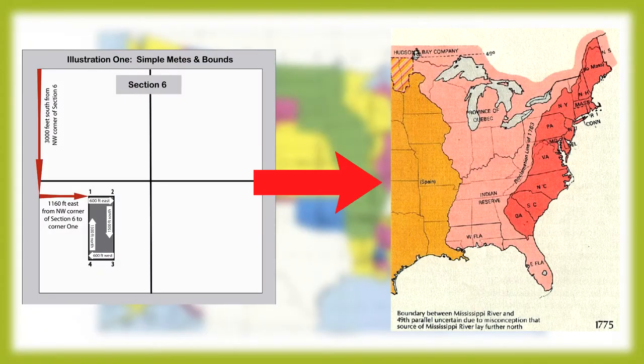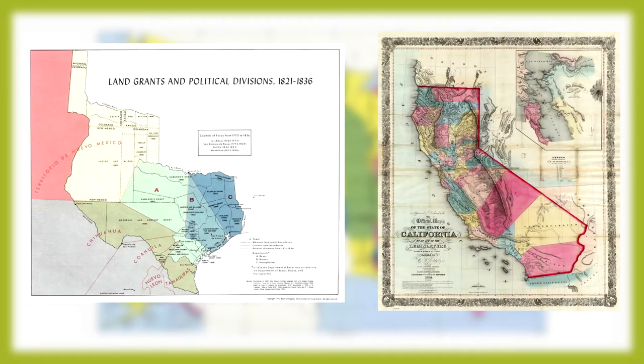The Eastern Seaboard primarily uses the Metes and Bounds System based on traditional British surveying practices, and land-grant boundaries from Spain are still used in parts of Texas, New Mexico, and California.